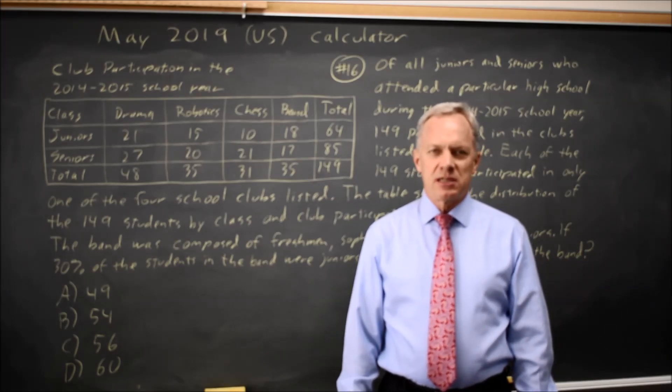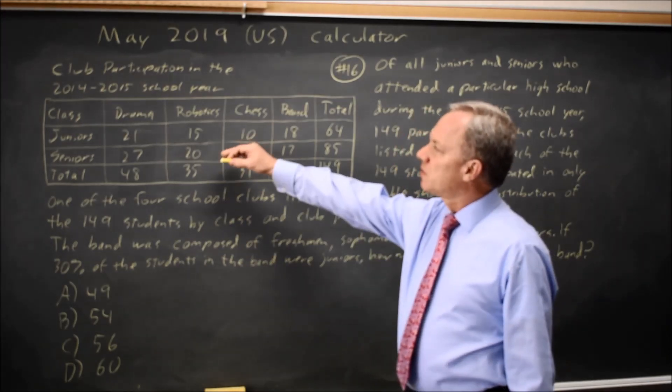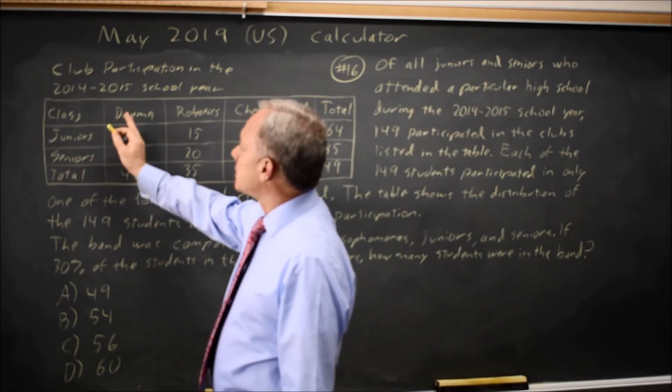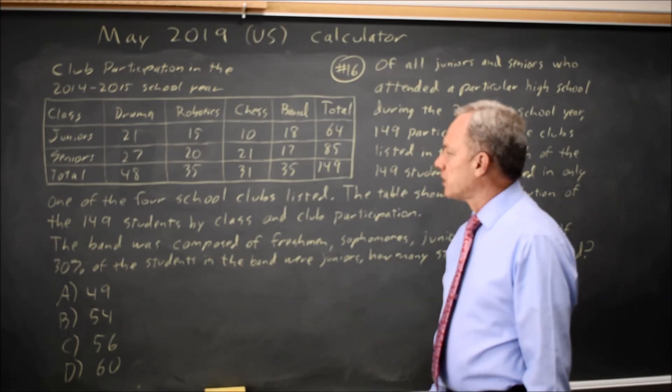This is calculator question number 16. The College Board gives us a table of values for the number of students in the junior and senior class who are in drama, robotics, chess, and band.